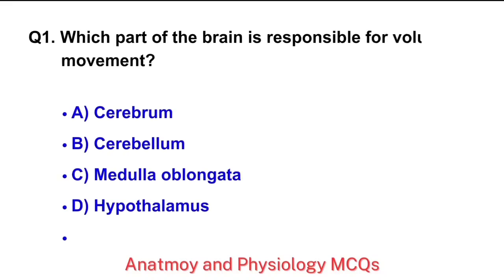Question No. 1. Which part of the brain is responsible for voluntary movement? The right answer is option A: Cerebrum.